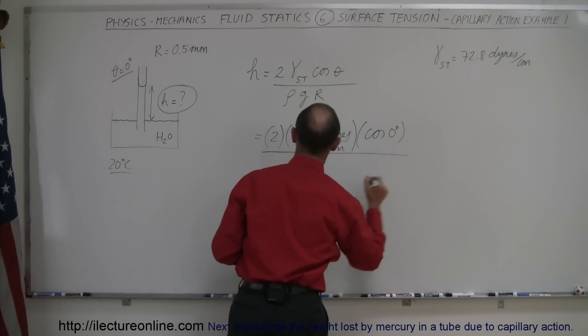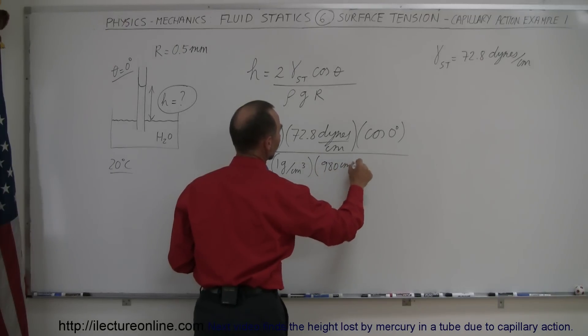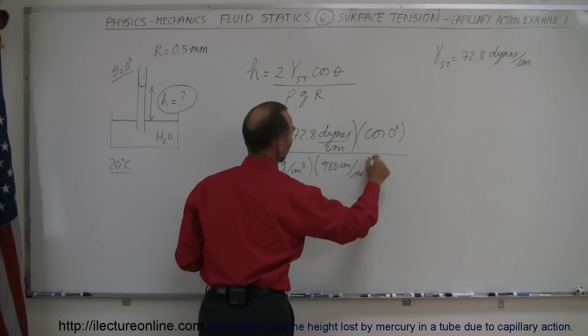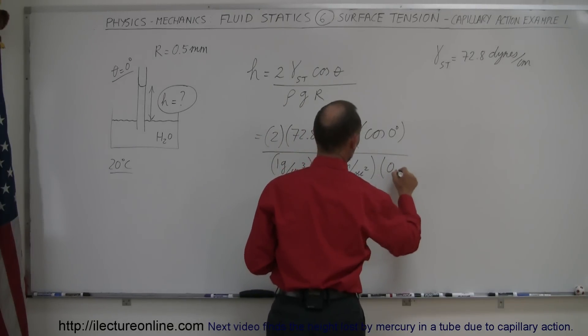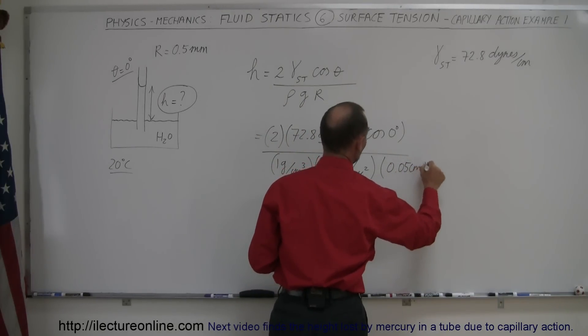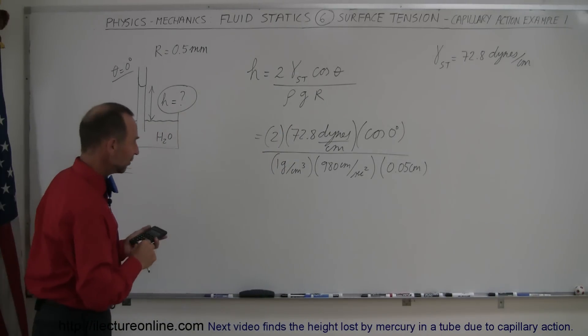All divided by the density of water, which is 1 gram per cubic centimeter, times g, which is 980 centimeters per second squared. And then finally, the radius converted to centimeters is 0.05 centimeters. So if you use CGS units, make sure you convert everything to grams and centimeters.